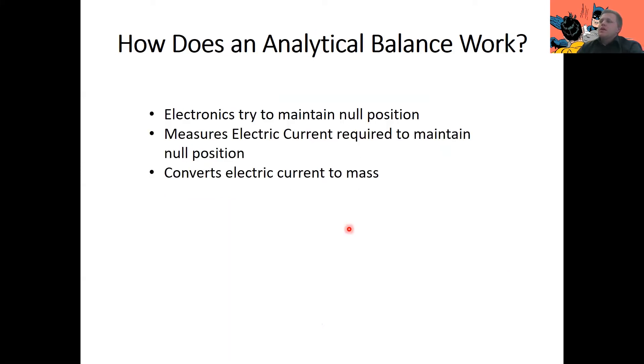So in summary, how does an analytical balance work? Well, it tries to maintain a null position. It does that by trying to balance the force applied by the sample with the force of your electromagnetic field. We try and have those equal but in opposite directions so they cancel out. So it then measures the electric current required to maintain the null position. And then converts the electric current to a mass using its internal calibration.